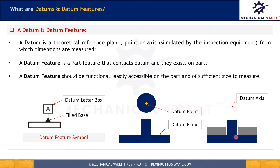The third criterion is that the datum feature must be of sufficient size to stabilize the part for measurement. If a very small flat face is used as the datum, it may not stabilize the part during inspection, causing all dimensions to come out wrong. So the datum feature should be of sufficient size to stabilize the part. If a feature is functional, easily accessible, and of sufficient size, it can be used as a datum feature to establish datums.